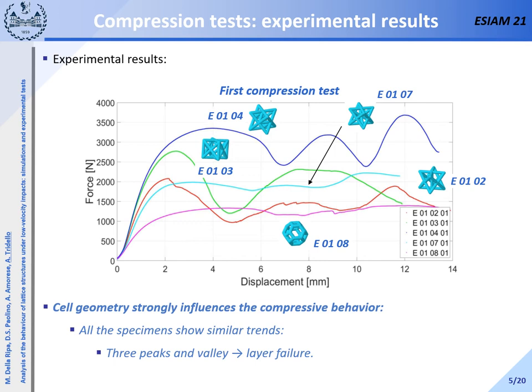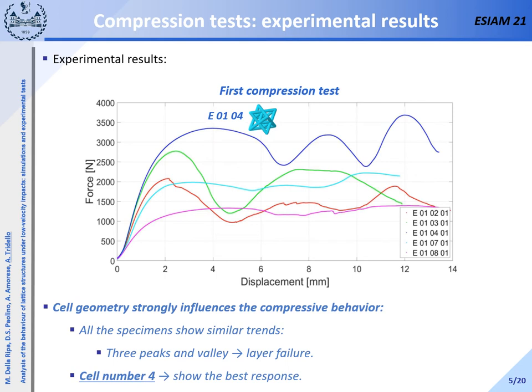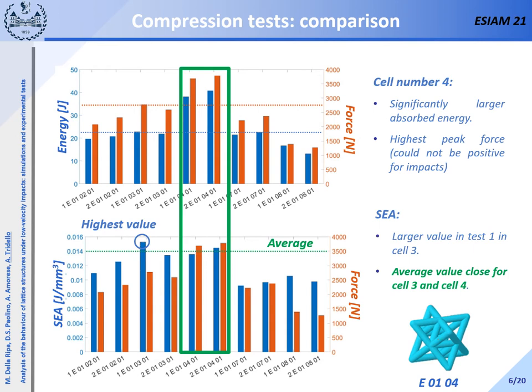As can be seen in the figure, the cell geometry strongly influences the compression response with very large differences. For example, all the spacings show three peaks and three valleys in the plastic region. These valleys correspond to the failure of one layer of cells. For cell 8, this behavior is less pronounced. Cell number 4 shows the best behavior. For a proper comparison, different parameters like the peak force, the total absorbed energy, and the specific energy absorption are compared. According to the figure, the cell allowing for the highest energy absorption and the highest SEA is cell number 4, which has been selected as the most appropriate for energy absorption applications.